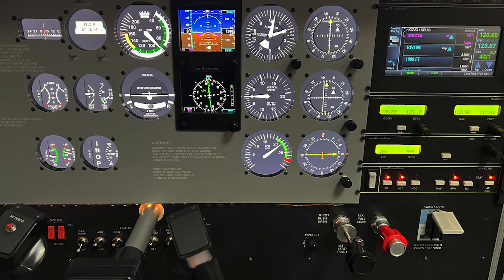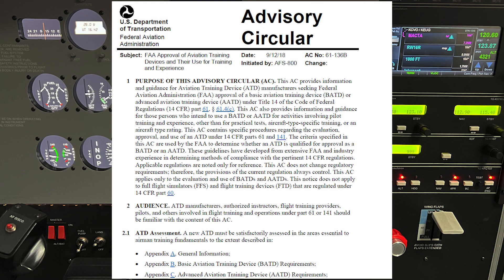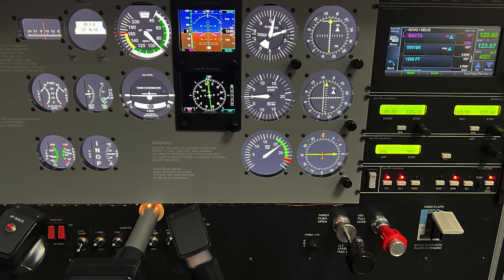My AATD, which is approved through the process described in AC61-136B, includes dual Garmin G5 displays complemented by traditional primary instruments, and emulations of a Garmin GTN-650 and a King KFC-150 autopilot flight director.